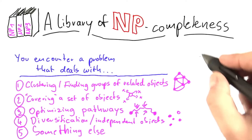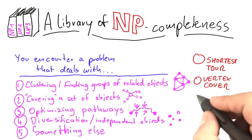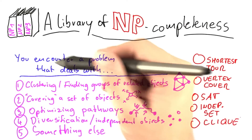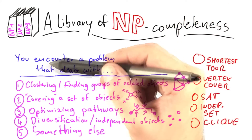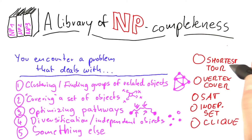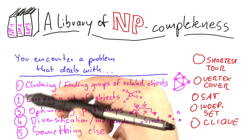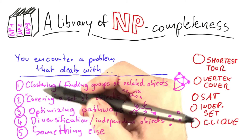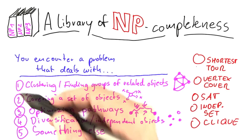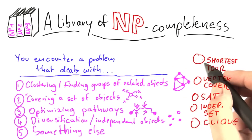You already know five NP-complete problems: shortest tour, vertex cover, set cover, independent set, and clique. What I'd like to know from you is, if you encounter a problem that arises in one of these five situations, which of these known NP-complete problems would be your best bet for proving it NP-complete — basically using it as a basis for a reduction? These are numbered, and you can enter your numbers for the ones you think match best in the circles shown.